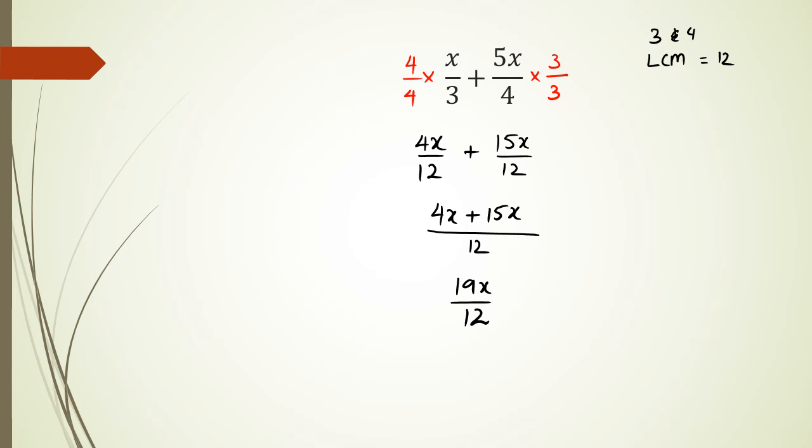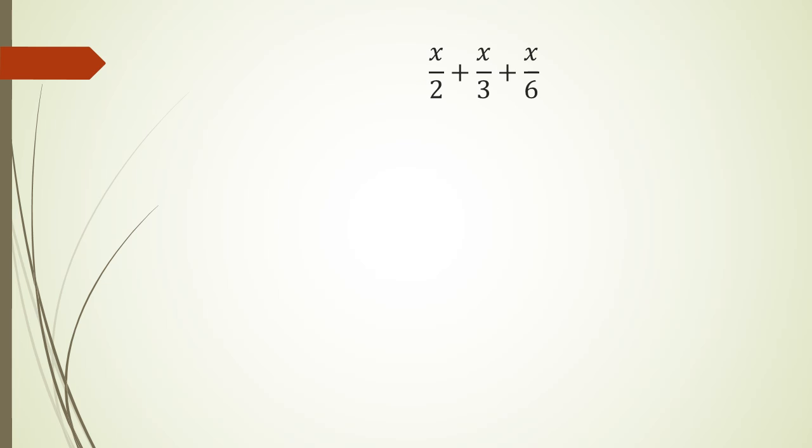Let's look at another example. This time, we have actually got 3 fractions, with denominators of 2, 3, and 6. Now with 2, 3, and 6, I know that the lowest common multiple is actually 6. So what I need to do is change x over 2 with a denominator of 6, x over 3 with a denominator of 6. But with x over 6, I can just leave it as it is.